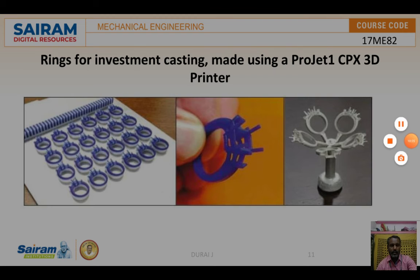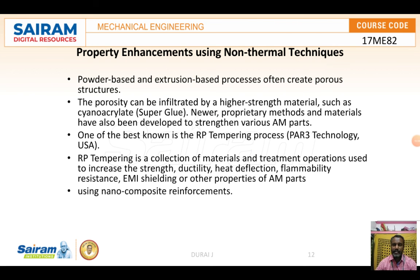Next is property enhancement using non-thermal techniques. Powder-based and extrusion-based processes often create porous structures. The porosity can be infiltrated by higher-strength materials such as cyanoacrylate. Newer property enhancement methods and materials have also been developed to strengthen various AM parts. One of the best-known rapid prototyping processes is tempering — a collection of material treatment operations used to increase strength, ductility, heat deflection, flammability resistance, EMI shielding, and other properties of AM parts using nano-composite reinforcement.